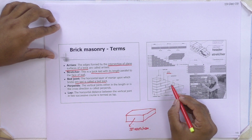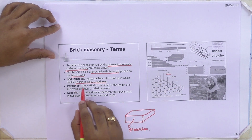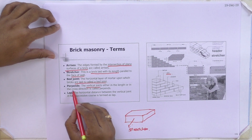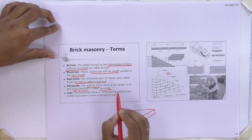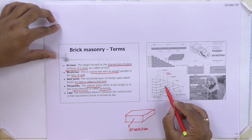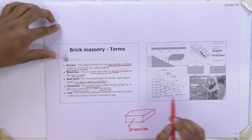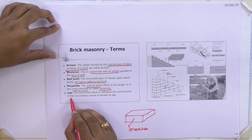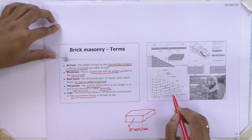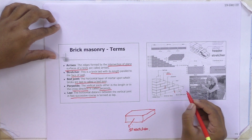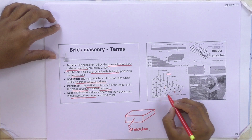The joint between two bricks is the bed joint, and the vertical joint either in the length or cross direction is called perpent. The horizontal distance between the vertical joints in two successive courses is called lap. You can see the lap between two layers here.